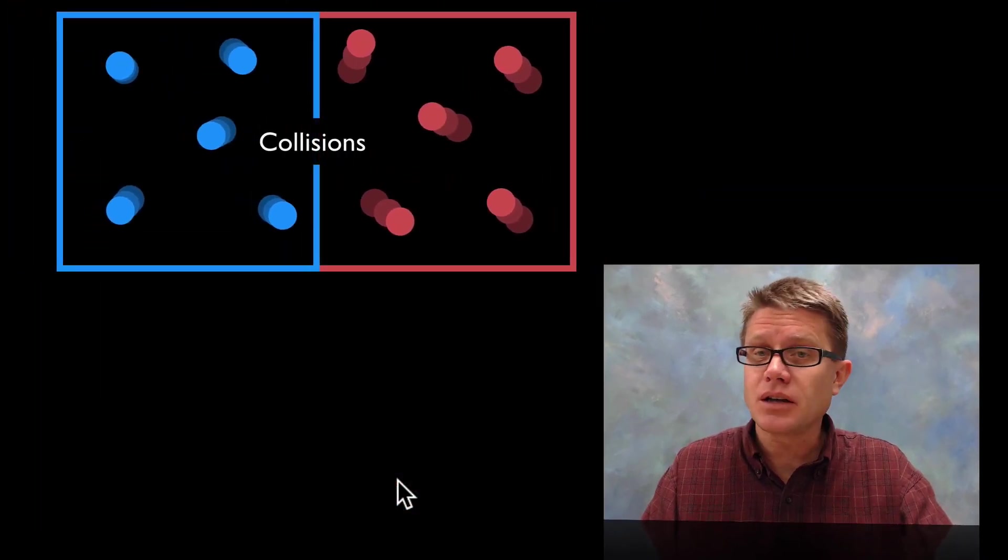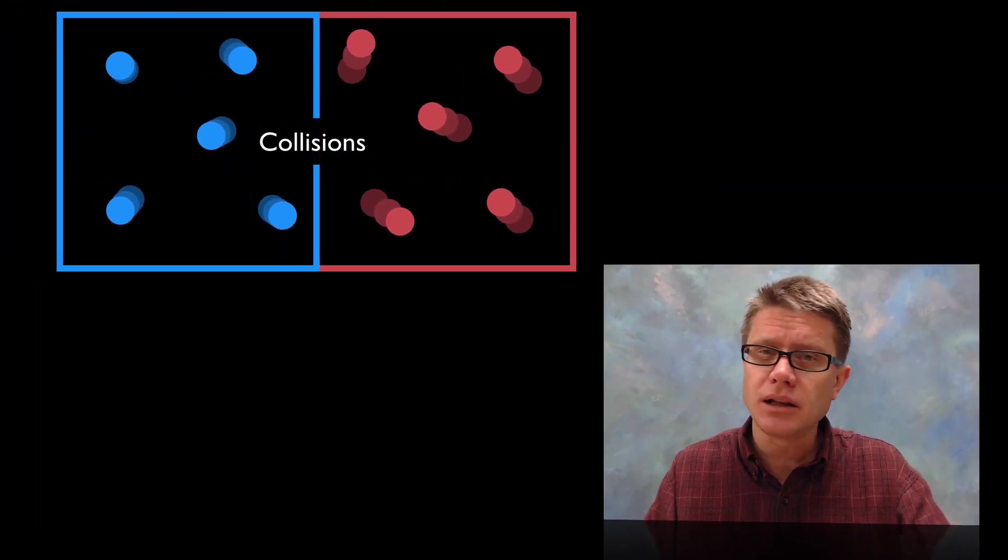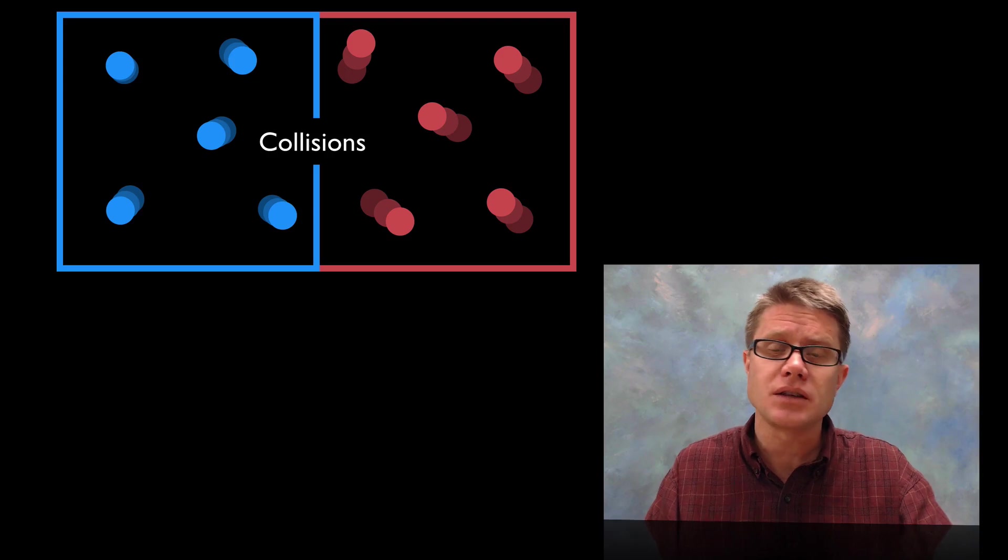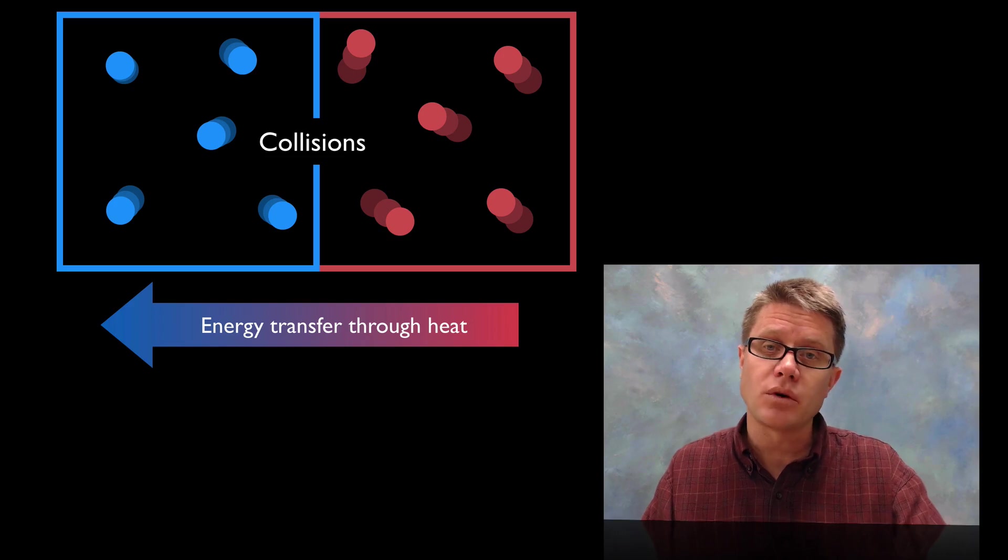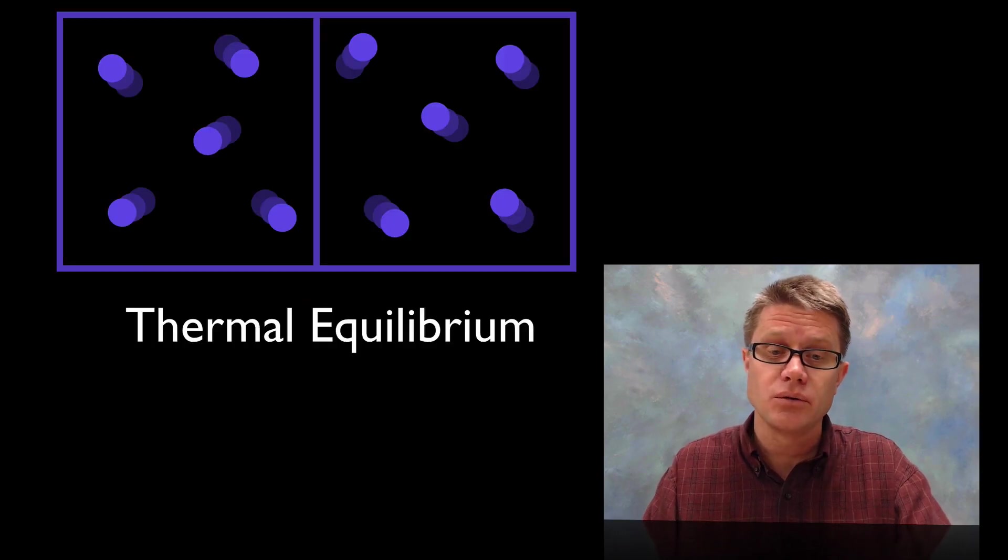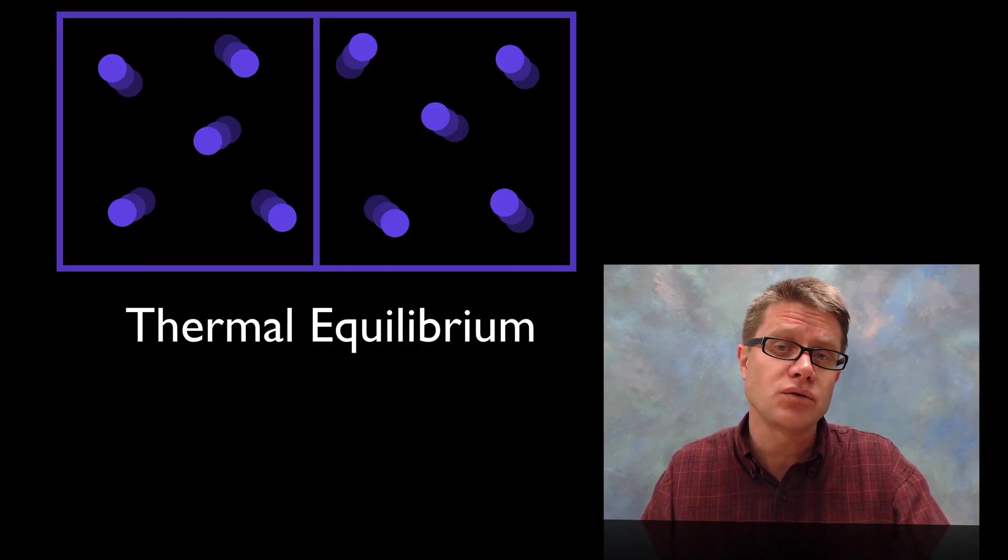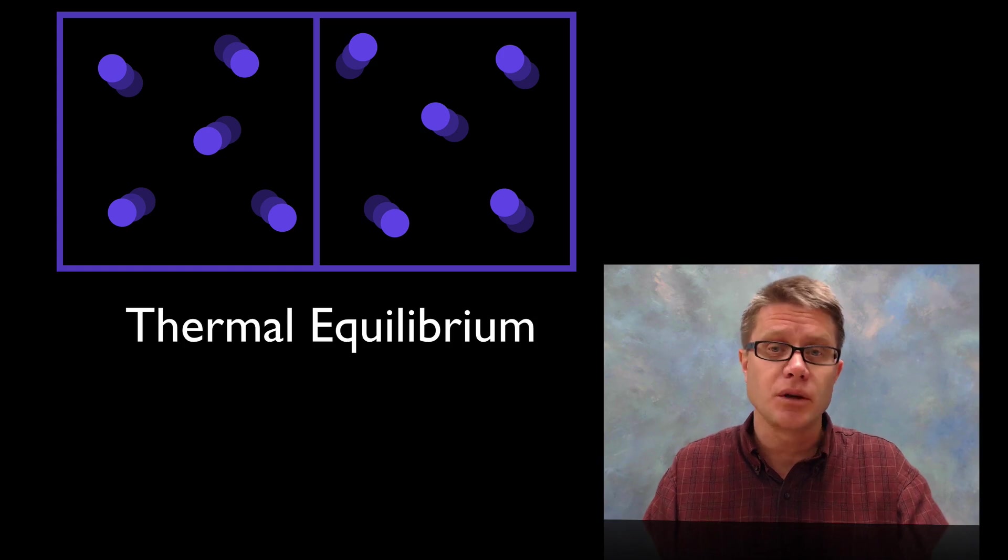And so if we ever put them in contact with another there's going to be a lot of collisions between these molecules. And as they collide they're transferring some of that kinetic energy. And so what we're really doing is we're transferring energy from the warmer object to the colder object through heat until they eventually reach what we call thermal equilibrium. In other words it's the same average kinetic energy on both sides.